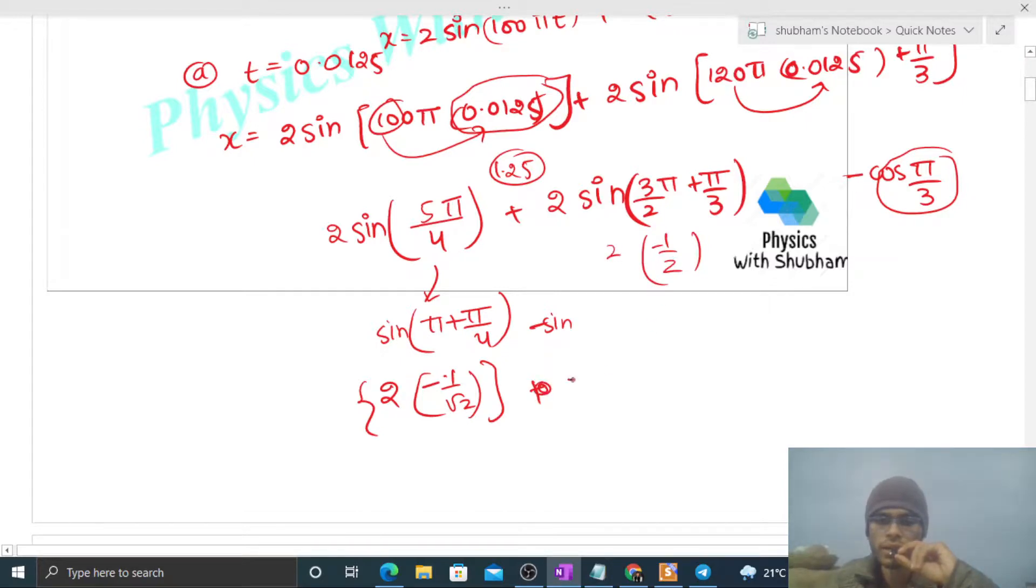So this is minus 1. This is minus of root 2 minus 1. And what is root 2? That is 1.414. So this is minus 2.414.